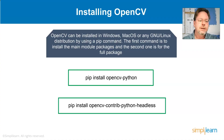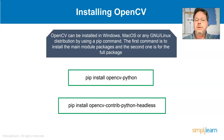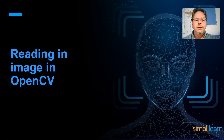We'll start with installing OpenCV. It's pretty straightforward. In Python, you do 'pip install opencv-python'. You can also 'pip install opencv-contrib-python-headless'. OpenCV can be installed on Windows, macOS, or any GNU Linux distribution using pip. The first command installs the main module packages, and the second is for the full package. Usually you want the full package.